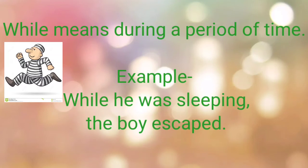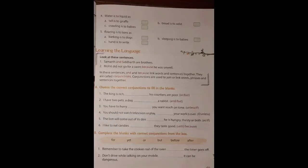Next is 'while.' 'While' means during a period of time — something which is ongoing. Example: 'While he was sleeping, the boy escaped.' During the time he was sleeping, the boy went. I hope you have understood the meaning of conjunctions and their usage.